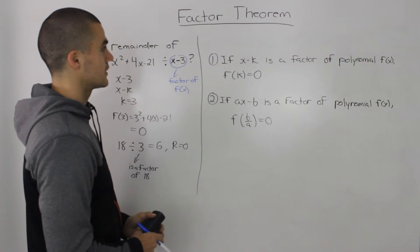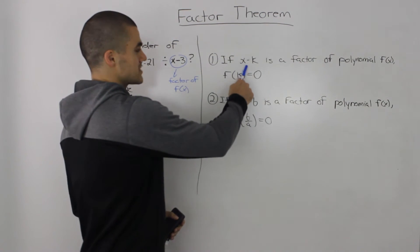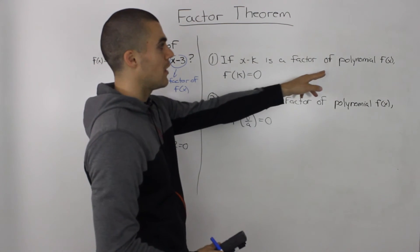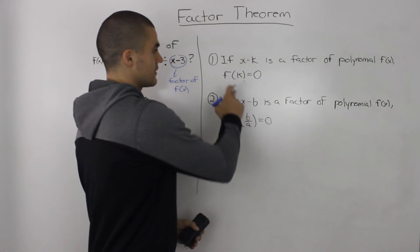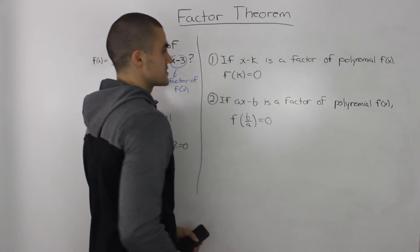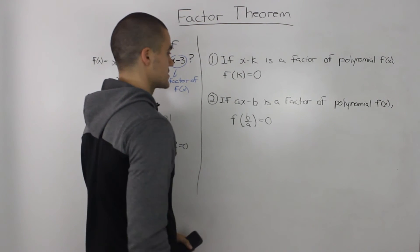More specifically, there's two cases you could run into. If (x - k) is a factor of a polynomial f(x), then f(k) = 0, or the remainder equals 0.